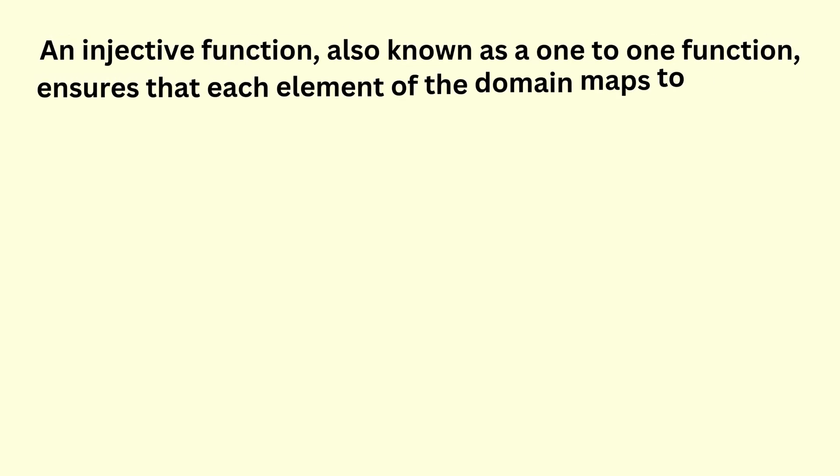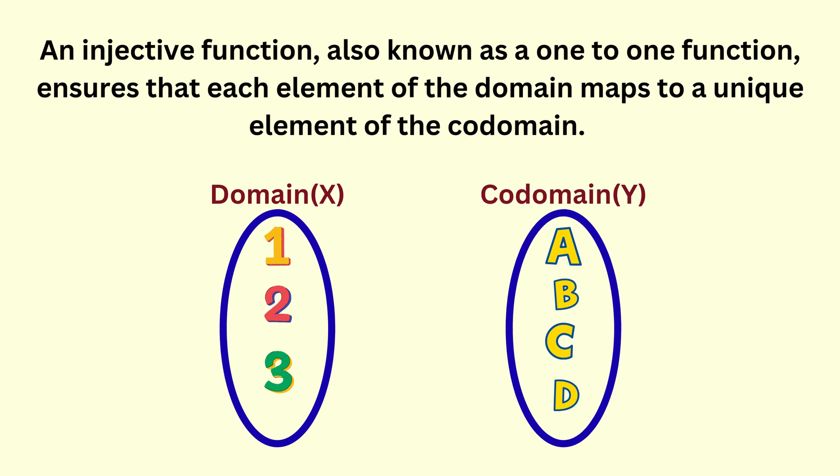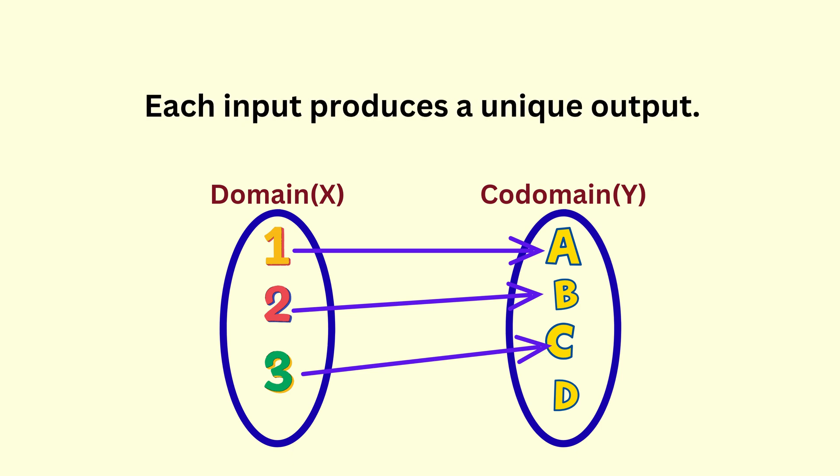An injective function, also known as a one-to-one function, ensures that each element of the domain maps to a unique element of the codomain. In simple terms, each input produces a unique output.